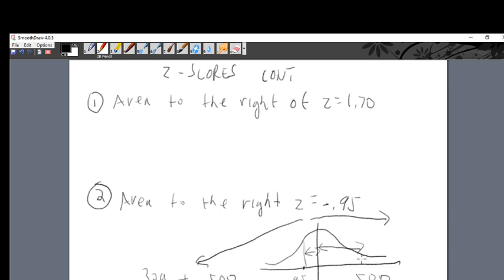And that's worth 0.329. This is worth 0.500. Add the two together, and we've got our answer. It is 0.829, the answer for the area to the right of Z equals negative 0.95.